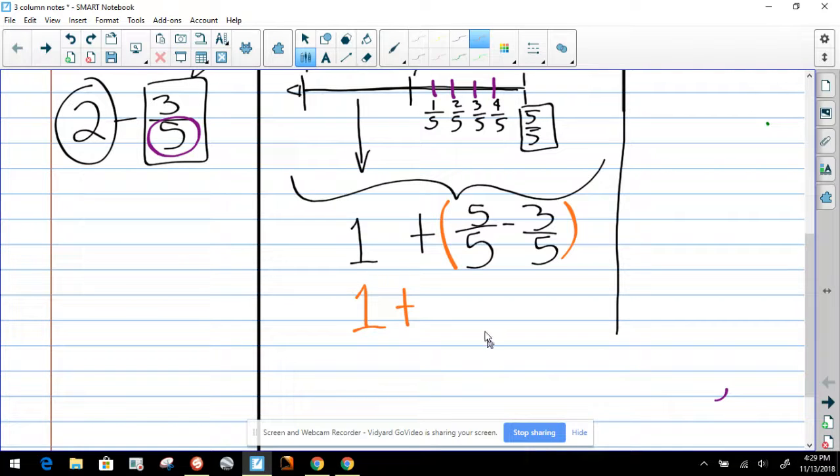So now we can say that the answer is 1 plus, what would be 5 minus 3? The answer is 2. The denominators are the same, so we're going to leave them as they are. And now we know that the remainder is 1 and 2/5.